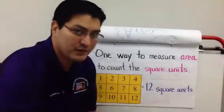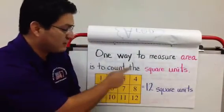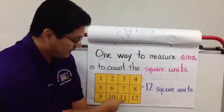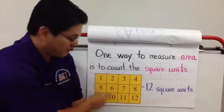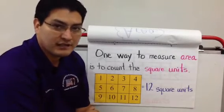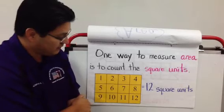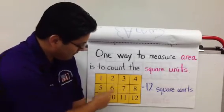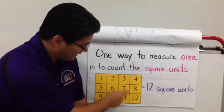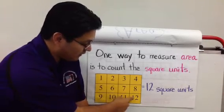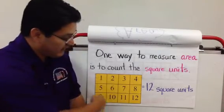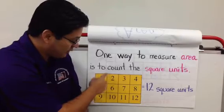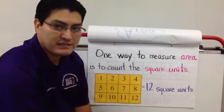One way to measure the area is to count the square units. This is a rectangle. We already labeled them with numbers. They are already square already in this rectangle. I'm going to count them. 1, 2, 3, 4, 5, 6, 7, 8, 9, 10, 11, 12. In this rectangle, the area is 12 square units because there are 12 squares and each one is considered to be a unit.